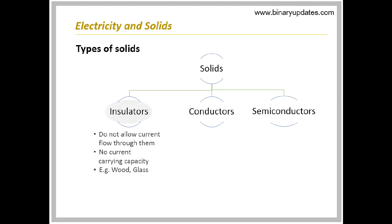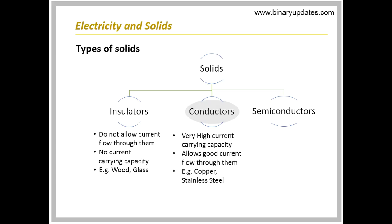The insulators do not have current carrying capacity. Hence, they do not allow current flow through them. Examples are wood and glass. The conductors have very good conductivity. Hence, they always allow current flow through them. Examples are copper and stainless steel.